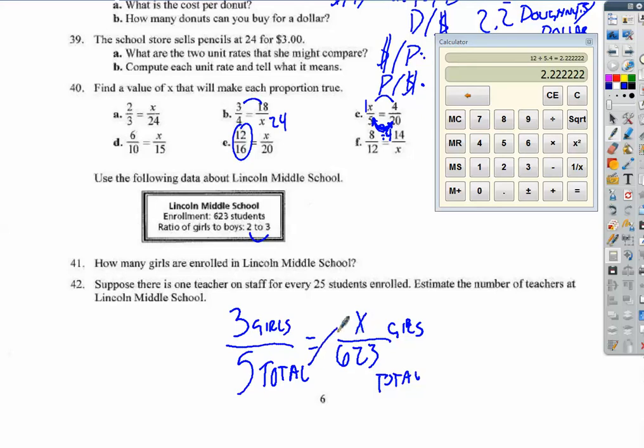Oh sorry, girls to boys. That is a problem. So girls are listed first. So that means it is a 2. So, we have 2 times 623 is equal to 5 times x. So 2 times 623 divided by 5 equals. And so we have 249 girls.